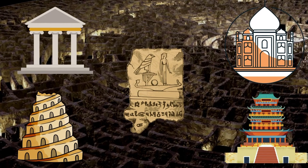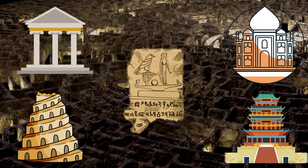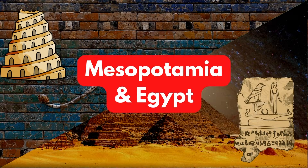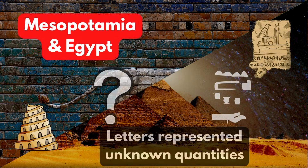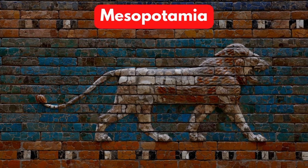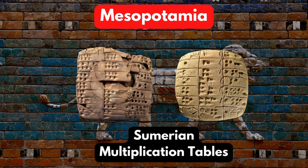However, the history of algebra is far more complex, with contributions from practically all major civilizations through history. The ancient Mesopotamians and Egyptians were some of the first to use algebraic concepts such as letters to represent unknown quantities. The Mesopotamians used tables on clay tablets to aid calculations.